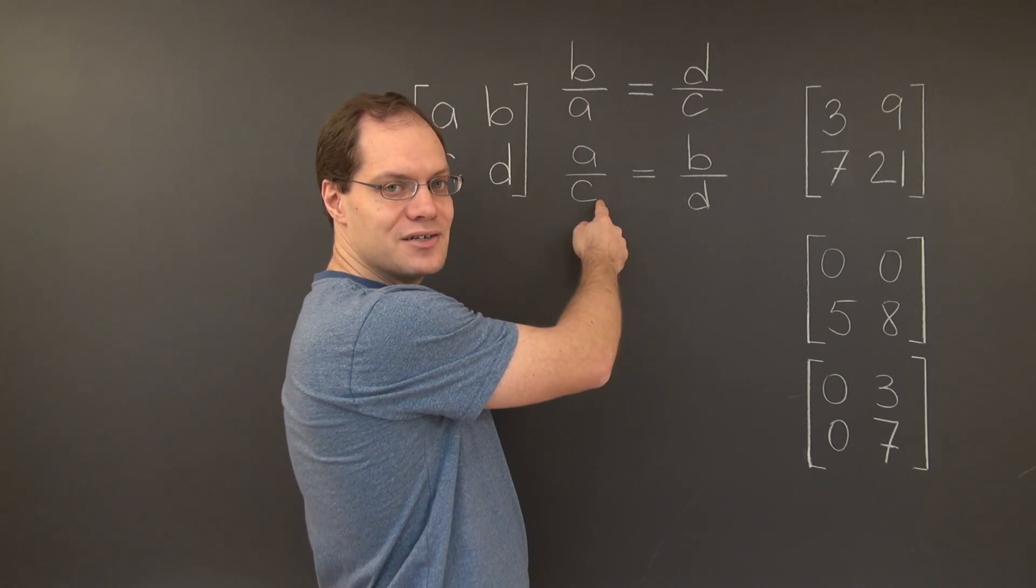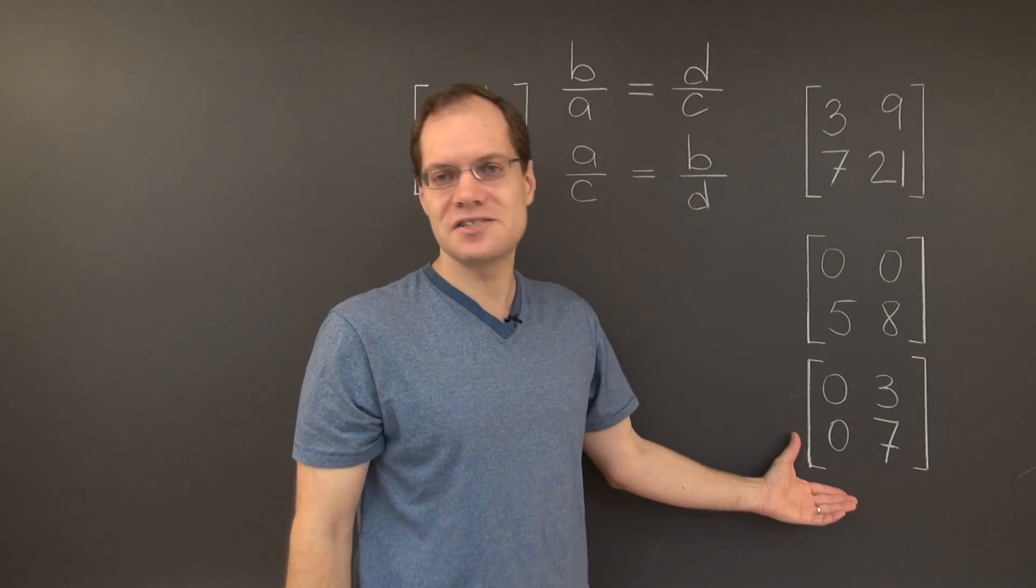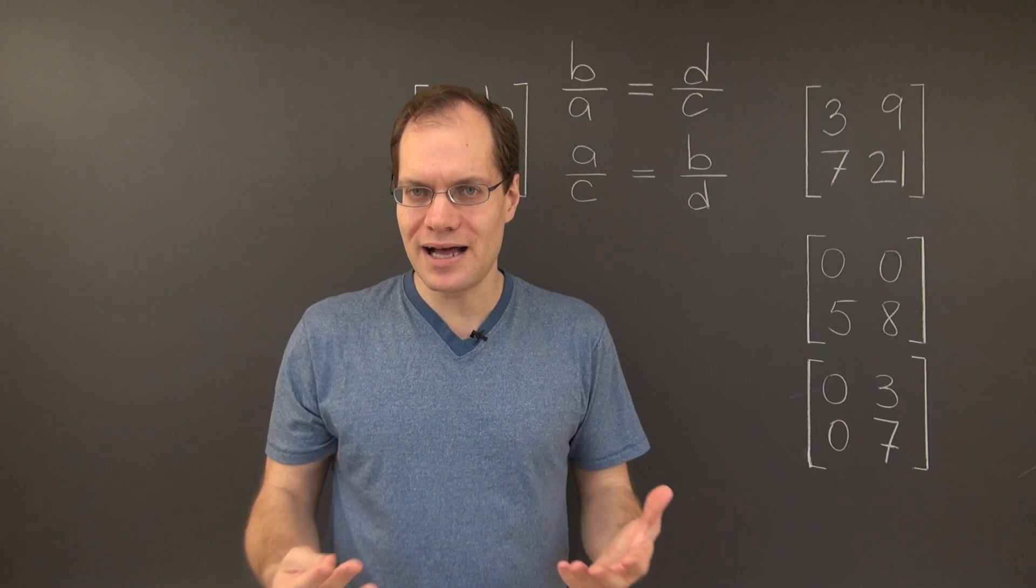And in this case, we'll have 0 over 0 being compared to 3 over 7. So as far as this matrix is concerned, neither criterion applies.